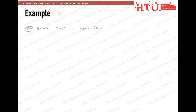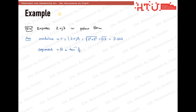As a general example, let us transform to polar form. The magnitude or modulus is the square root of the real part squared plus the imaginary part squared, which is the square root of 13, or 3.606. The phase angle or argument is the inverse tangent of the imaginary part divided by the real part, which gives 56.31 degrees using the calculator.